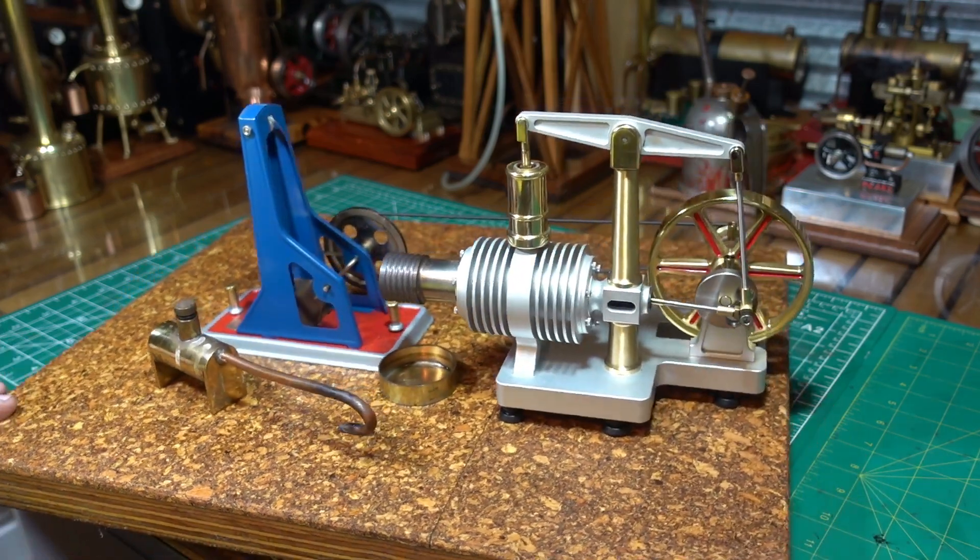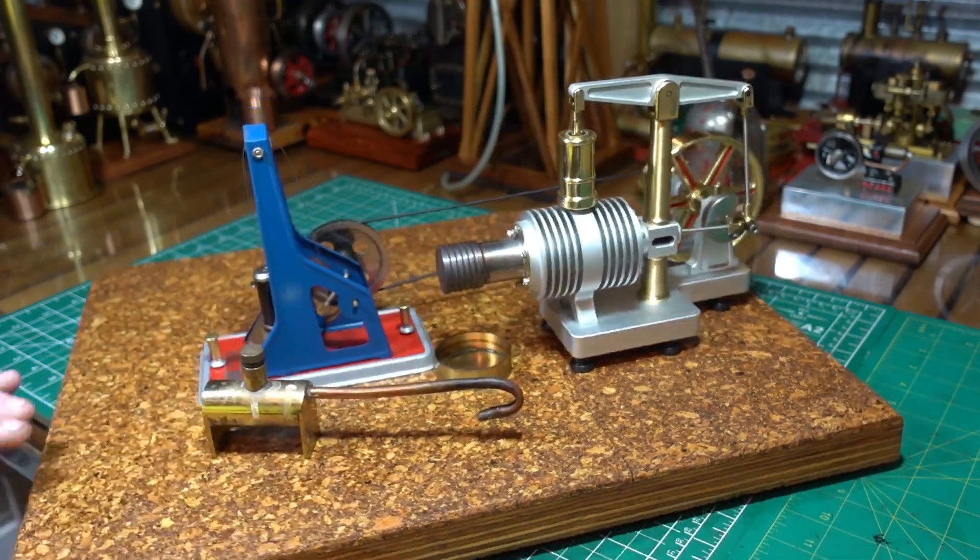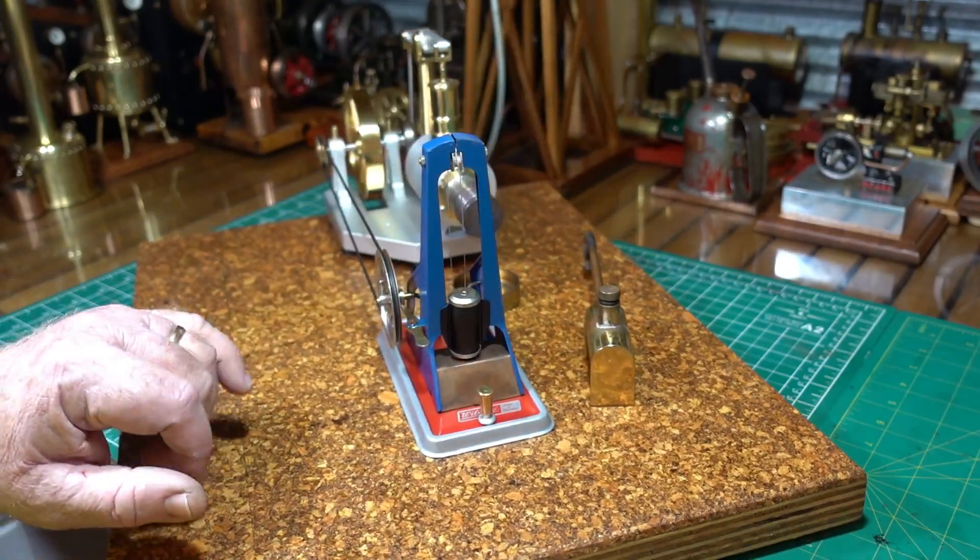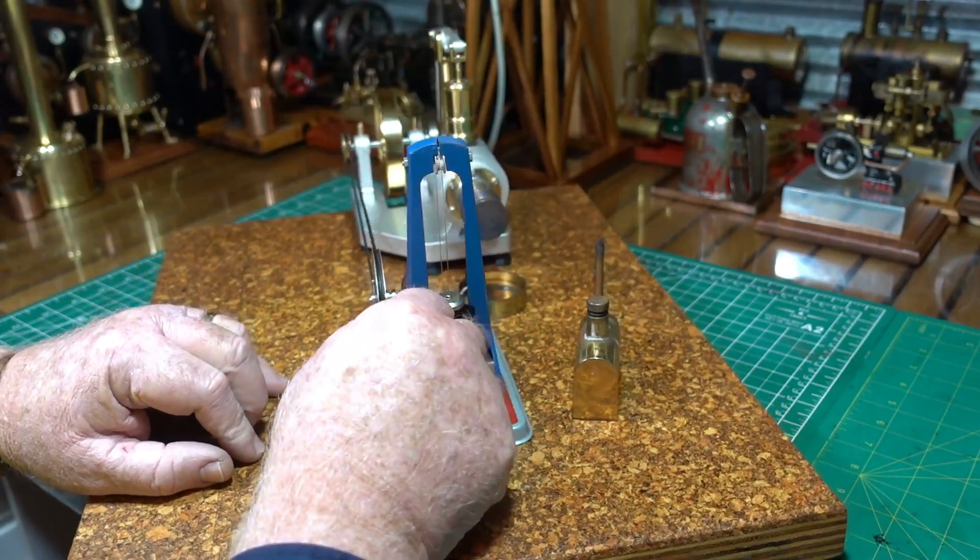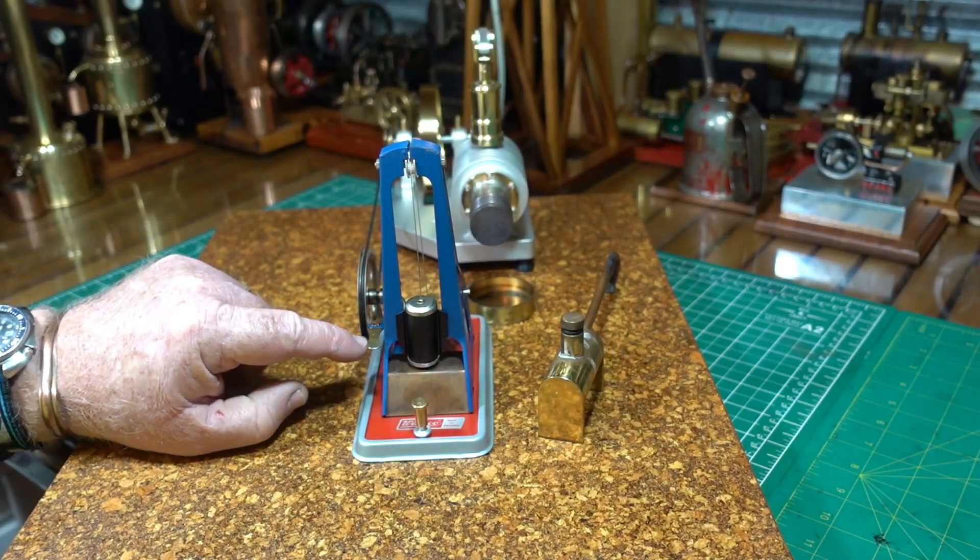G'day all, back again. This is going to be take two of the Taro engine and the Wilesco hammer. Heaps of you guys gave me lots of hints about this. As you remember on the last one this was slipping. This was going back and forth.